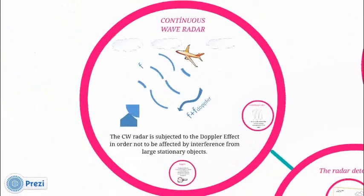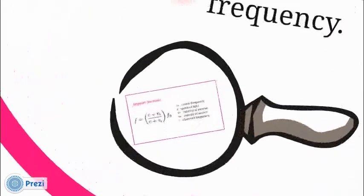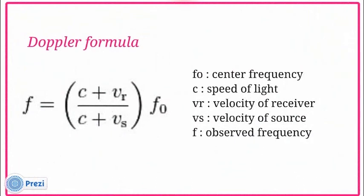The continuous wave radar principle depends on the Doppler effect. The Doppler effect is the change between the transmitted signal frequency and received signal frequency. The Doppler frequency adds velocity information about an object at distance as you can see formula.